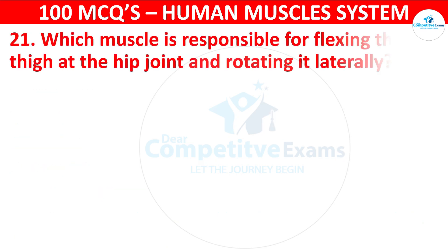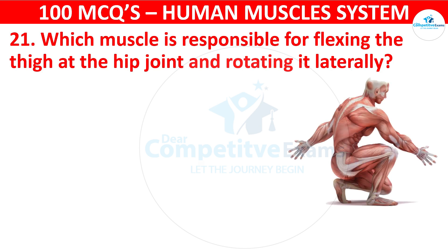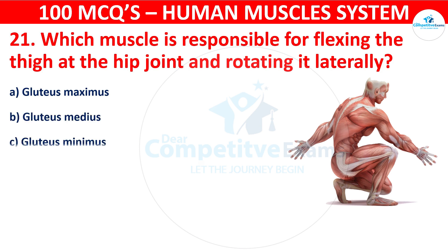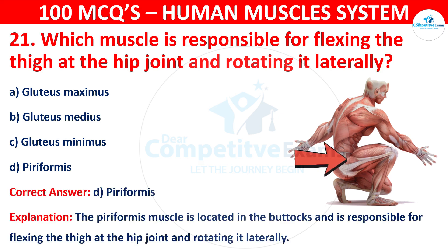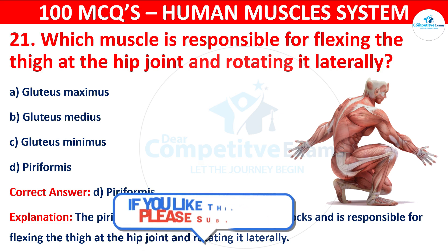Question number twenty-one: Which muscle is responsible for flexing the thigh at the hip joint and rotating it laterally? Your options are: Gluteus maximus, Gluteus medius, Gluteus minimus, or Piriformis. The correct answer is D, that is piriformis. This muscle is located in the buttocks and is responsible for flexing the thigh at the hip joint and rotating it laterally.